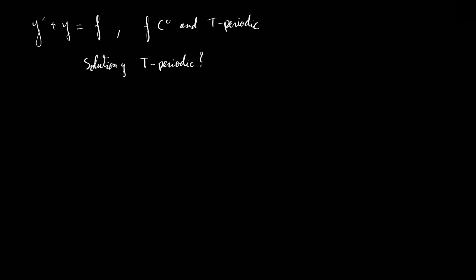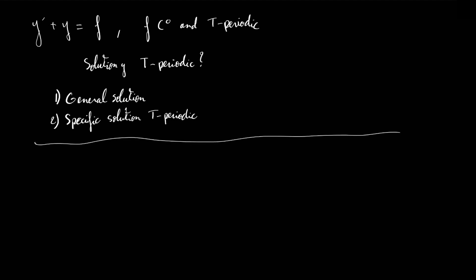We are going to approach this problem in two steps. The first step will be to identify a general solution, and the second step is to find a specific solution that will be T-periodic. Let's start with the first step. For this first step, we are going to use a well-known trick, which is to multiply by the exponential function.